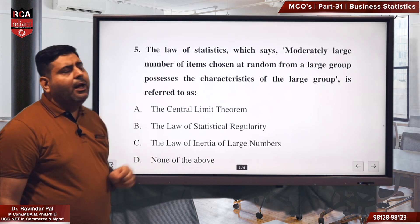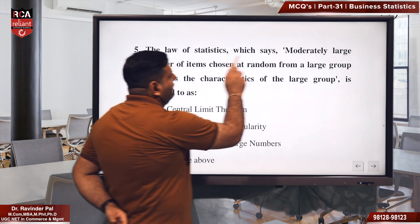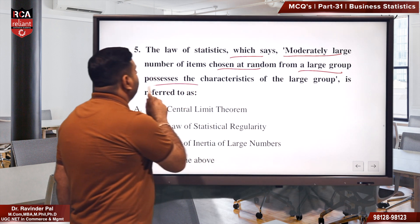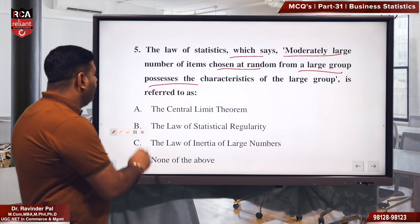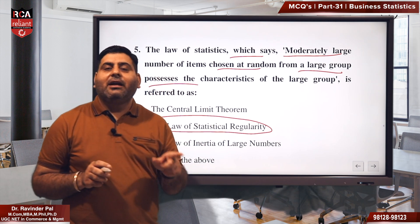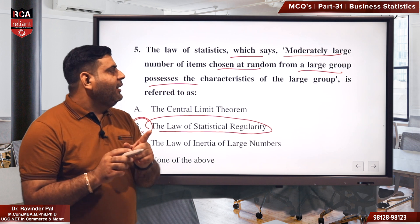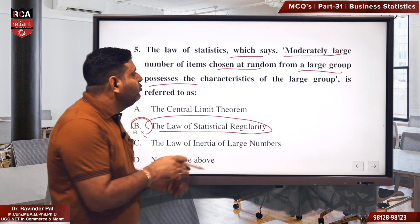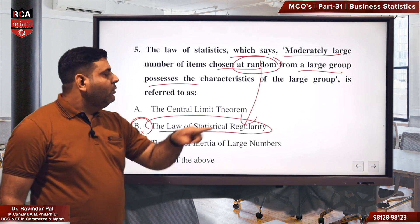Fifth question is about an important law of sampling. The question says: the law of statistics states that a moderately large number of items chosen at random from a large group possesses the characteristics of that large group. What law is this? This is called the law of statistical regularity. Many students might expect the answer to be 'law of large numbers,' but that is not correct here. The key word is 'at random' — wherever randomness is involved, it refers to statistical regularity.